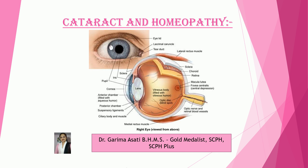Then there is the choroid — a layer containing blood vessels that lines the back of the eye, located between the retina and the sclera. Then there is the fovea, the center of the macula, which provides sharp vision. This is all about the anatomy of the eye.